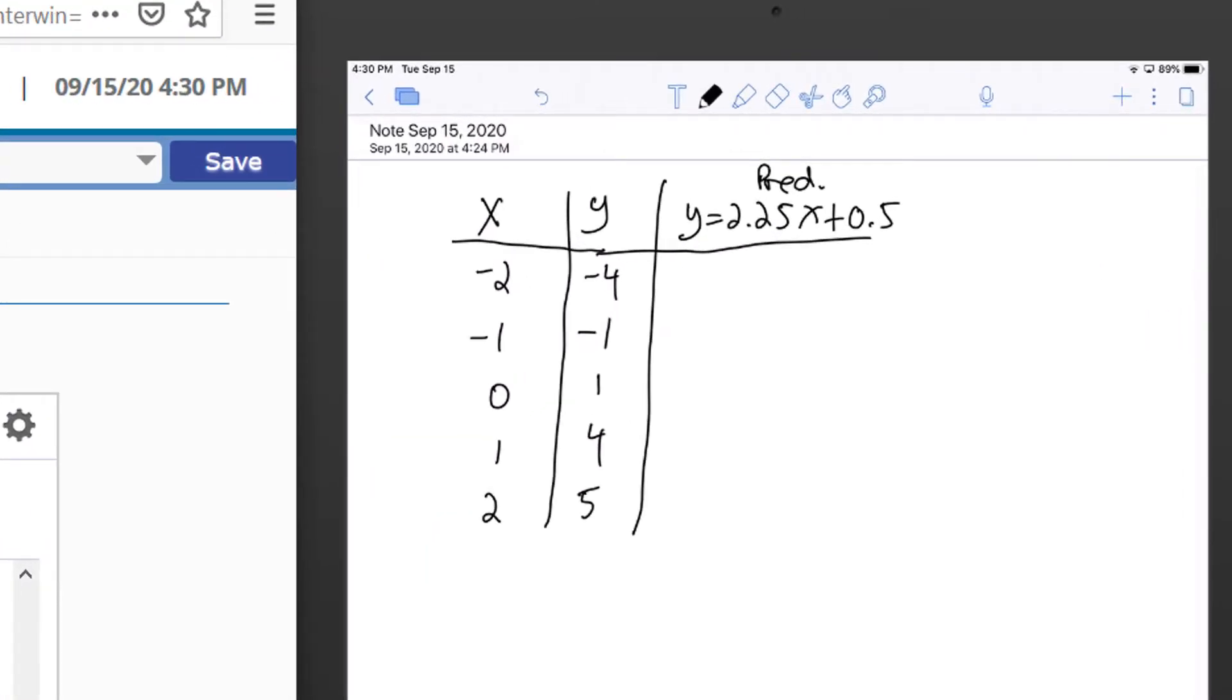I'm going to plug in each of these x values into that equation and come up with a predicted y. For example, if I plug in negative two, 2.25 times negative two plus 0.5 works out to be negative four. That was right on the money, and it should because we know that the line went through that point. If I plug in negative one, 2.25 times negative one plus 0.5 is negative 1.75. That one is a little bit off. Plug in zero—2.25 times zero plus 0.5—we should get 0.5.